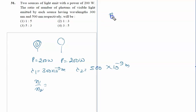The power is given by n1 × hc/λ1 = 200. For bulb 2, n2 × hc/λ2 also equals 200.